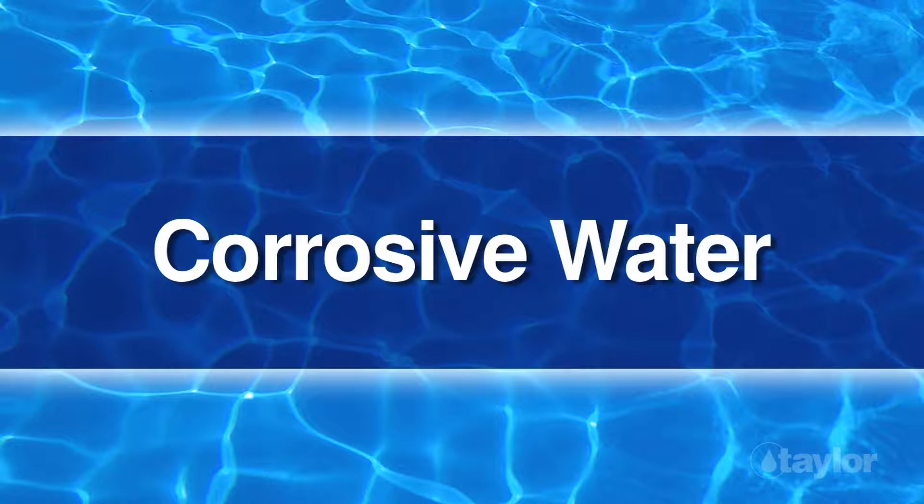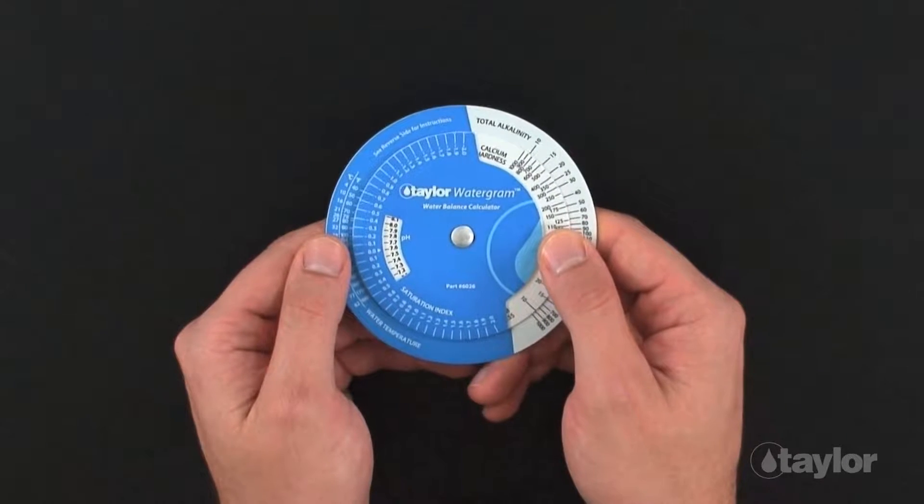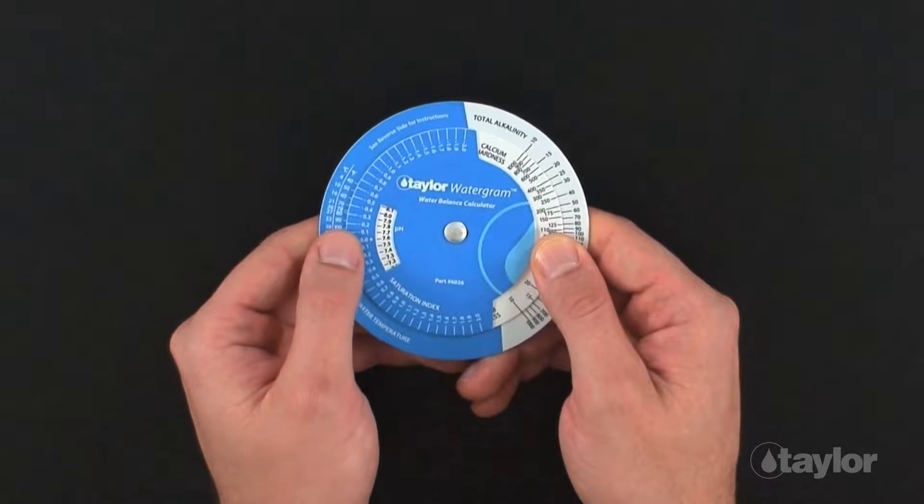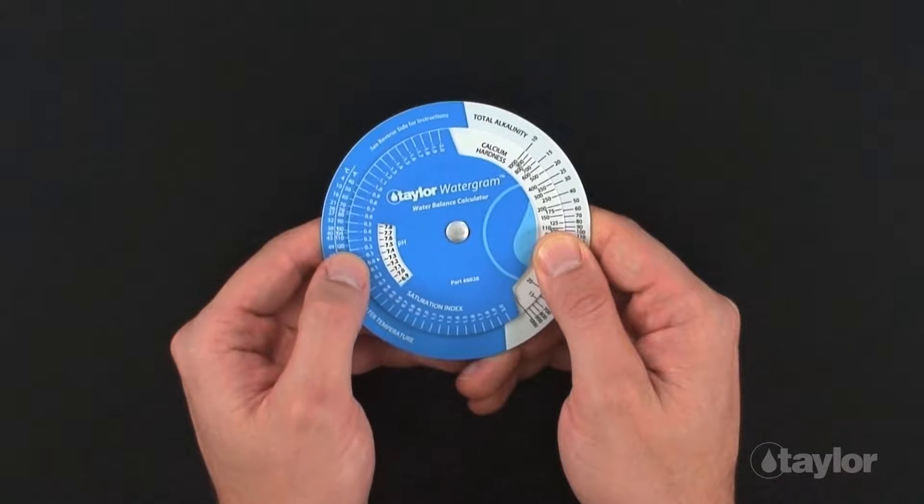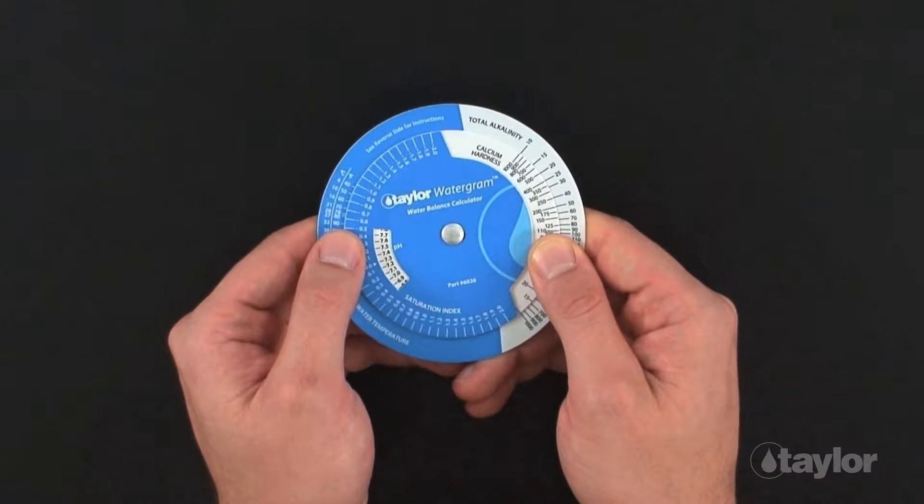Corrosive water. For this next demonstration, we will be using values that will give us a saturation index that indicates corrosive water. Set the calcium hardness value of 200 opposite the total alkalinity value of 50 on the Watergram. Hold the calcium hardness and total alkalinity values where they are and turn the wheel until the arrow points to the pH value of 7.3. Find the water temperature of 80 degrees Fahrenheit.